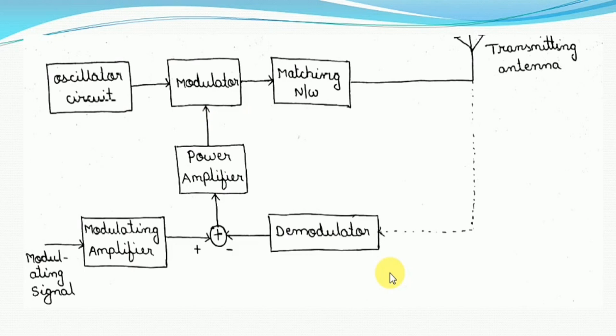If you observe this block diagram, the output stage of modulator is simply given to the matching network before it is transmitted to transmitting antenna. Now, why we have to use a matching network? In order to transfer the maximum power from the output of a modulator circuit to the transmitting antenna, we have to use a matching network such as tank circuits and so on.